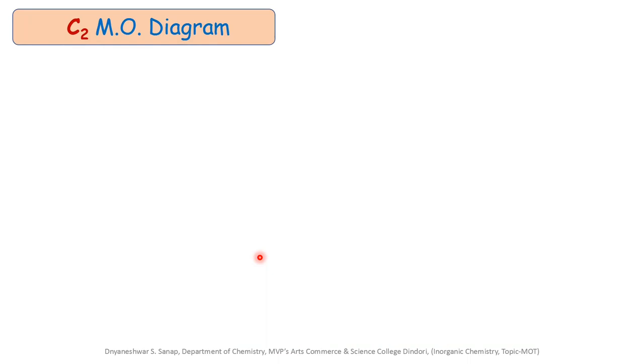The C2 molecule is formed by the combination of two carbon atoms. Before we start drawing the molecular orbital energy level diagram for the C2 molecule, first of all we have to understand the electronic configuration for the carbon atom. The electronic configuration for the first carbon atom is 1s², 2s², and 2p².